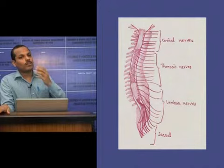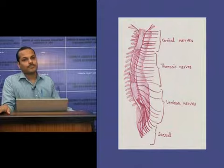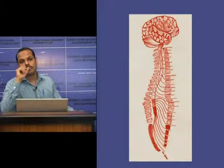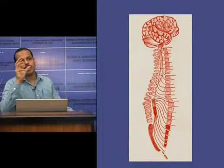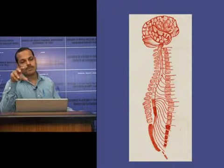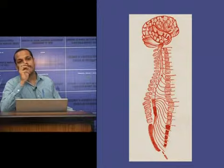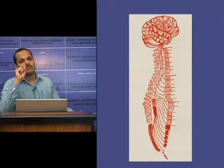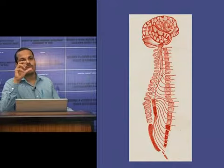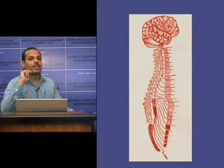Because the spinal cord is short compared to the vertebral column, the roots of spinal nerves from the lumbar, sacral, and coccygeal regions angle inferiorly in the vertebral cavity from the end of the spinal cord like a wisp of hair. These roots are called the cauda equina, or horse's tail.